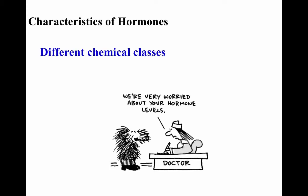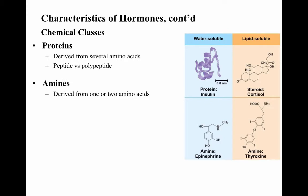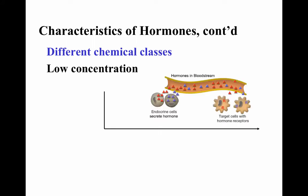Characteristics of hormones include different chemical classes and very low concentrations. Chemical classes are: proteins, derived from several amino acids (peptide vs. polypeptide); amines, derived from one or two amino acids; and steroids, derived from cholesterol. Eicosanoids are derived from fatty acids but won't be our focus — we'll concentrate primarily on proteins, amines, and steroids.